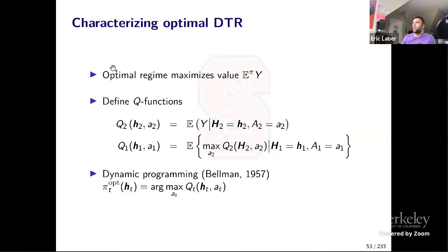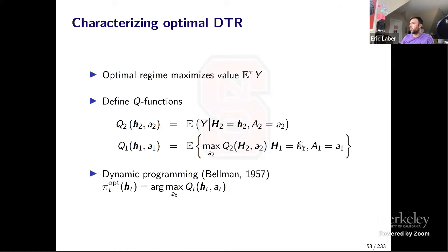We're going to focus on Q-learning. The optimal treatment regime maximizes the expected outcome if treatments are made according to PI — I'll write E superscript PI. I'll suppress some of the causal inference notation and just use this to indicate the expectation is with respect to the distribution of Y induced by assigning treatment according to PI. To characterize the regime that maximizes this, we use Q functions. Q2(H2, A2) is the expected outcome given second-stage history H2 and second-stage treatment A2. Q1 is the expected maximized second-stage Q function given H1 and A1.